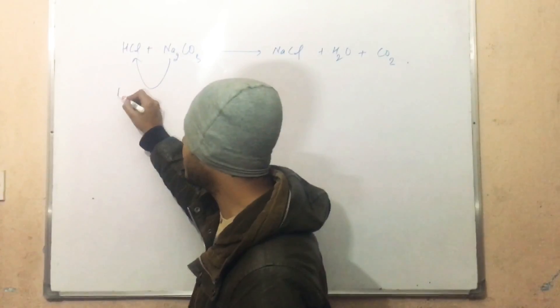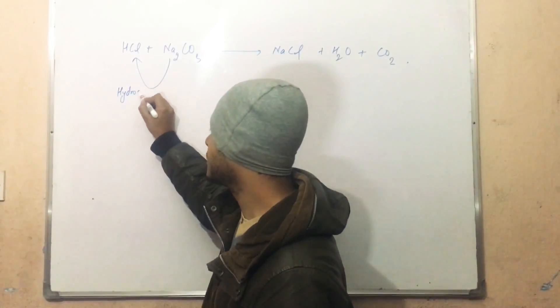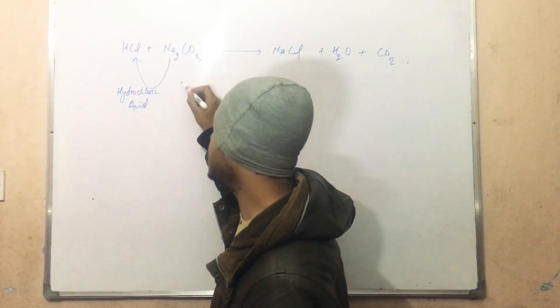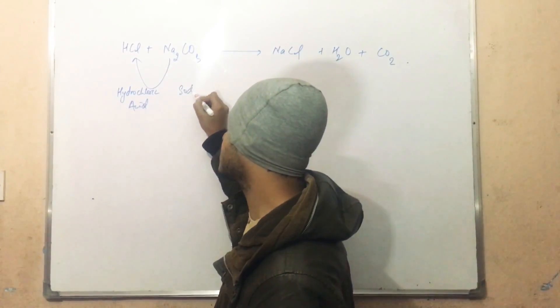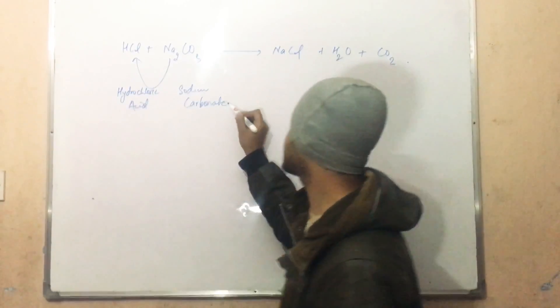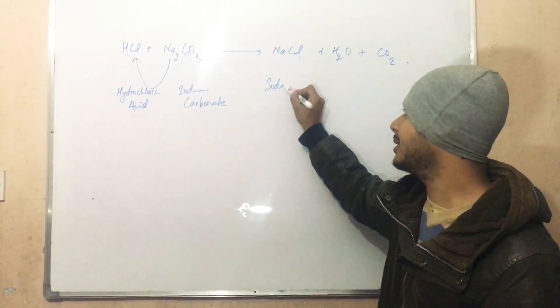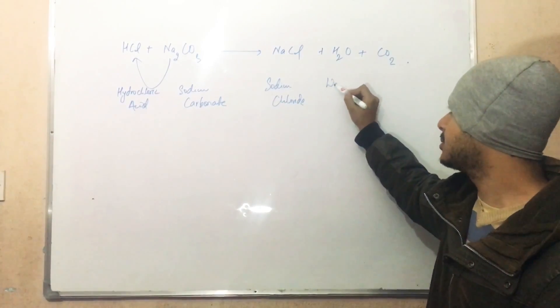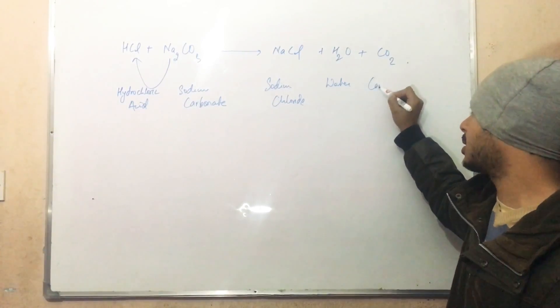When HCl reacts with sodium carbonate, it produces sodium chloride, water, and carbon dioxide.